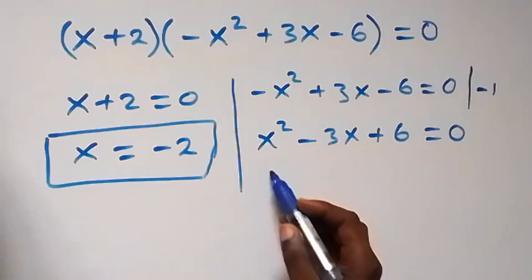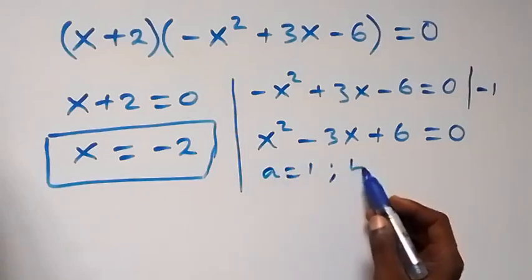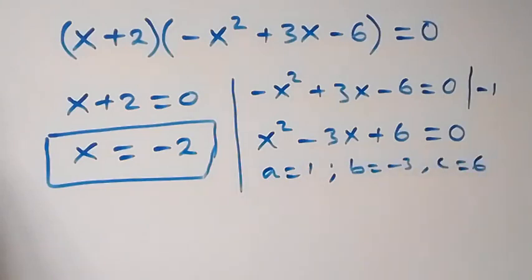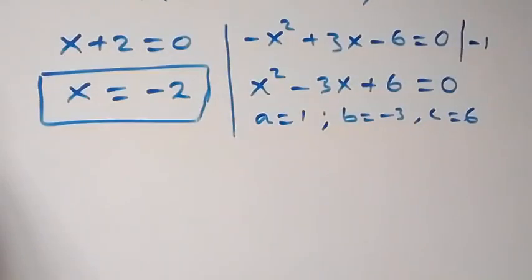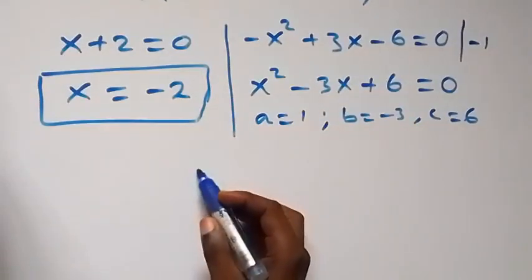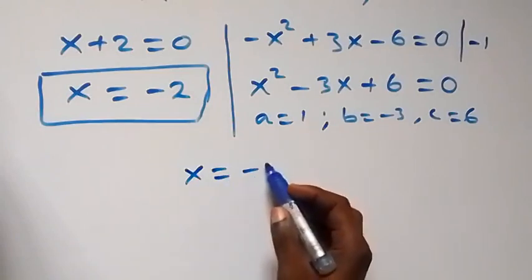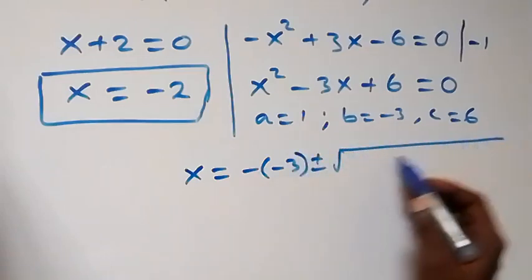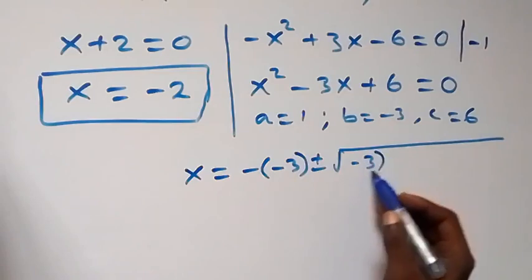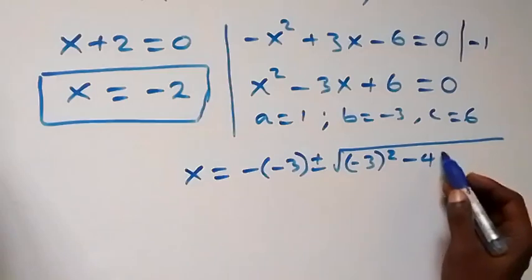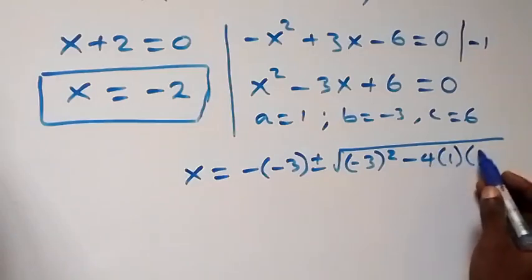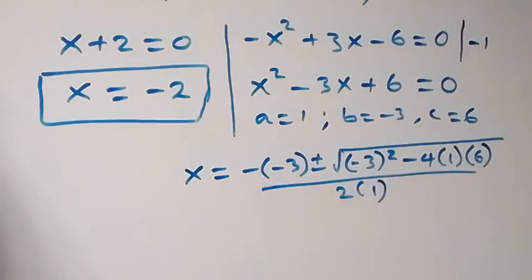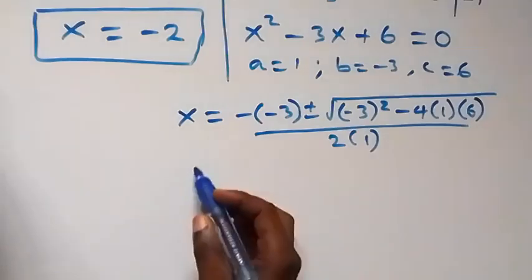We solve this using the quadratic formula, where a equals 1, b equals minus 3, and c equals 6. Applying the quadratic formula: x equals minus (minus 3) plus or minus the square root of (minus 3) squared minus 4 times 1 times 6, all over 2 times 1.